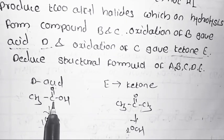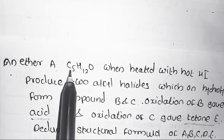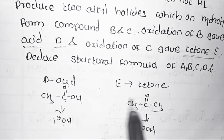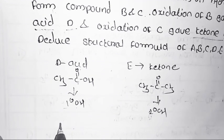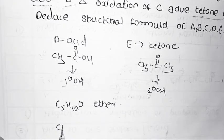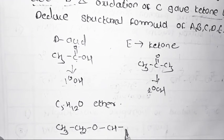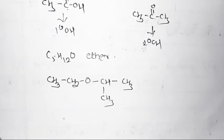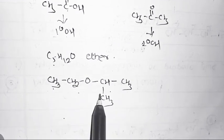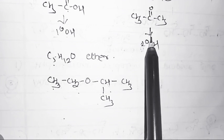In the given example, C5H12O is an ether. In this ether, one side is an ethyl group and the other is an isopropyl group. The structural formula of this ether is CH3CH2-O-CH(CH3)2. The ethyl group is converted into acid and the isopropyl group is converted into ketone.